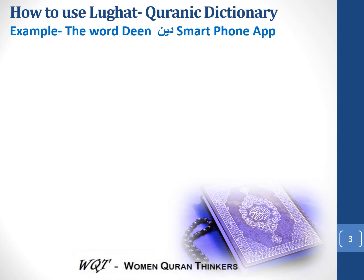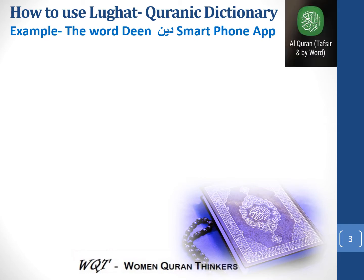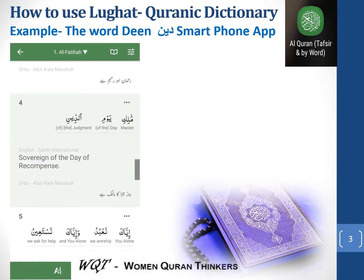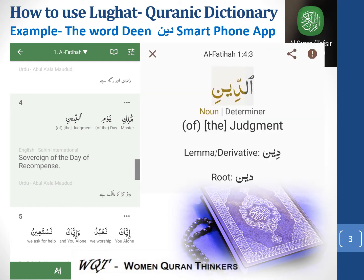Let's first discuss the word deen and how to understand it. We are going to the smartphone app Al-Quran Tafseer and ByWord, and click on the referred ayah, Malik-e-Yaum-id-Deen, which is Surah Fatiha ayah number 4, then click on the word deen. The reason is we are looking for the root word of this word, which is dal-yeh-noon.